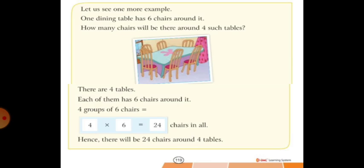Next, let us see one more example. One dining table has 6 chairs around it. So there are 4 tables.